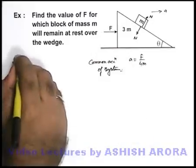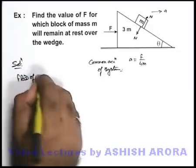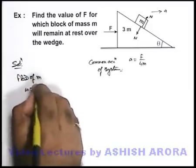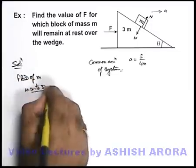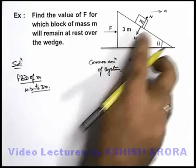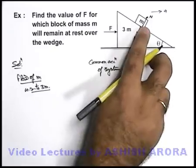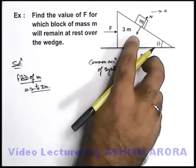If we draw the free body diagram of small m with respect to 3m, we are drawing it in the reference frame of 3m, or in the non-inertial reference frame, because it is always easier to analyze the forces acting on a body when it is placed over a wedge.